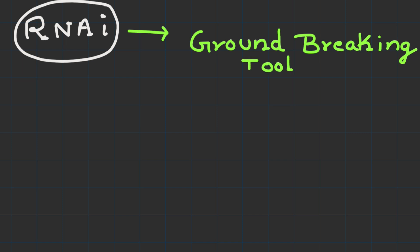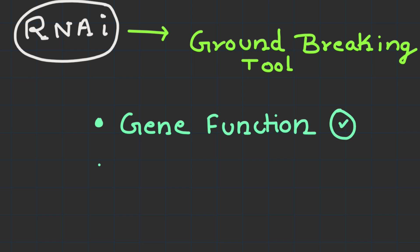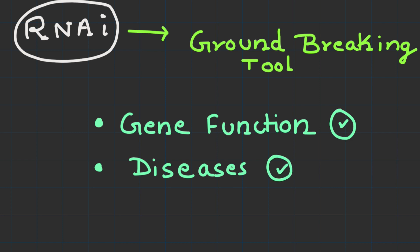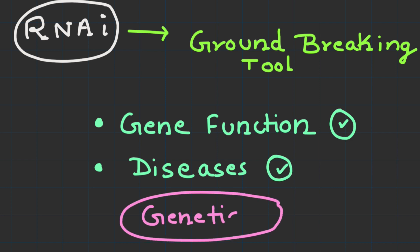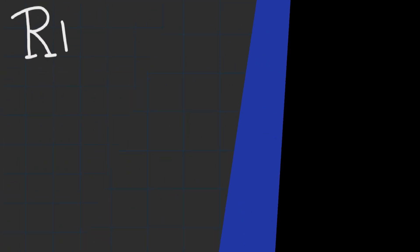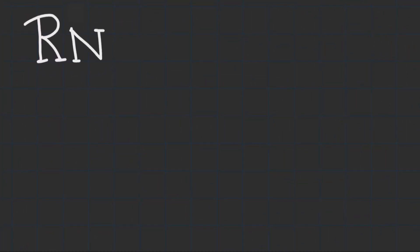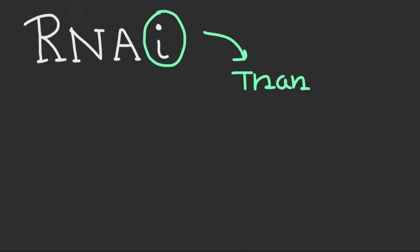RNA interference, with its intricate molecular mechanism and diverse applications, has emerged as a groundbreaking tool in modern biology. From unraveling gene functions to potentially treating diseases, RNAi continues to shape our understanding of genetics and offer exciting possibilities for the future. This concludes the topic on RNA interference — thank you for joining us, and we hope this video has provided you with valuable insights.